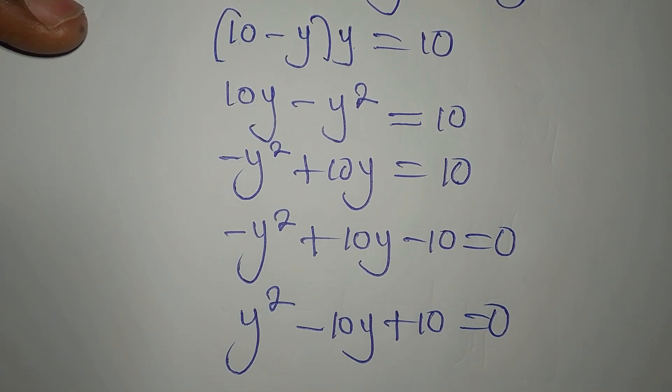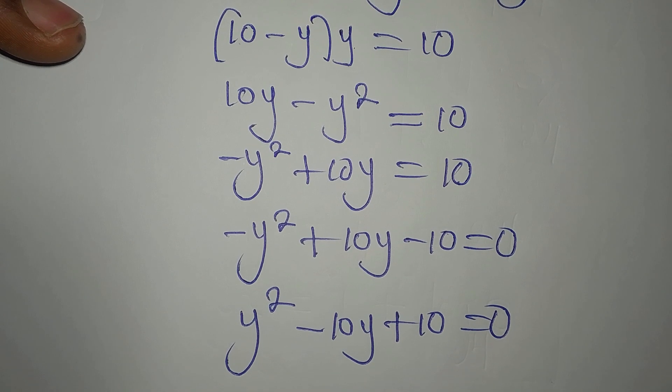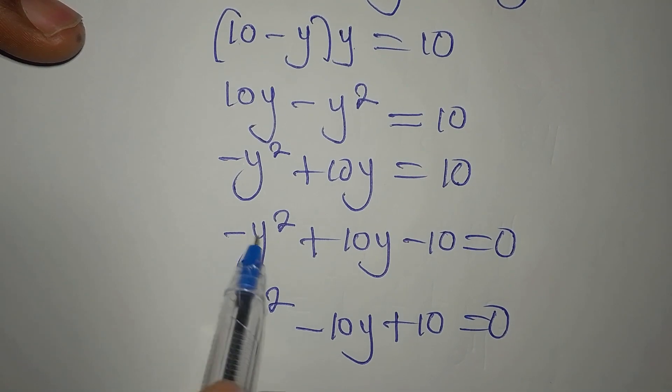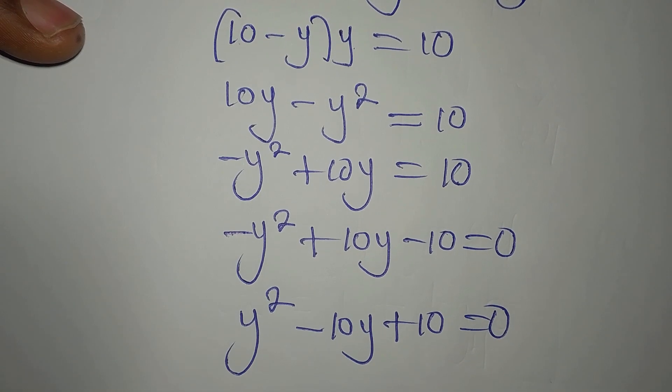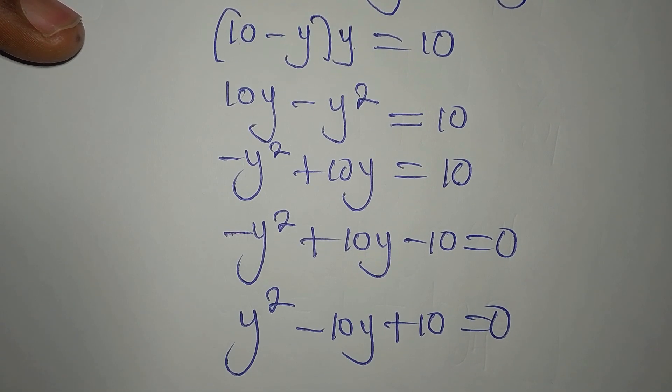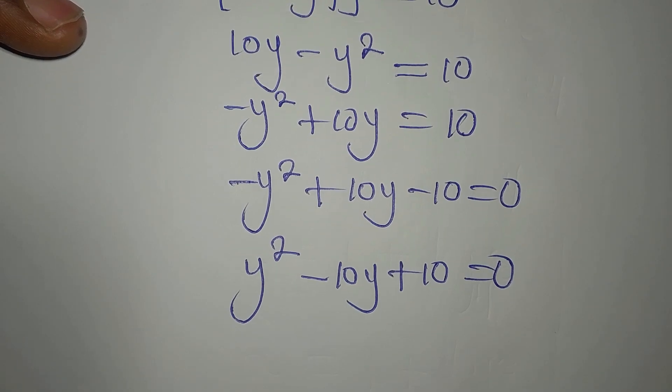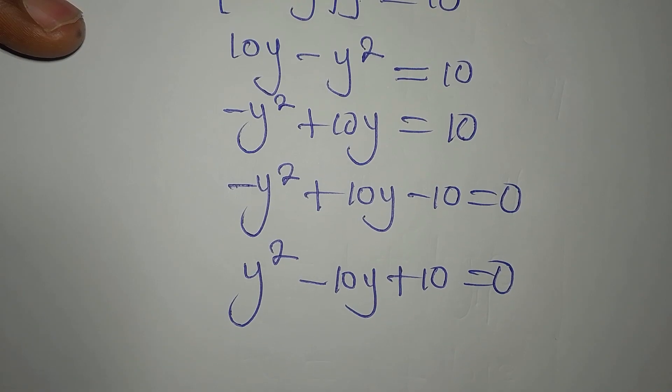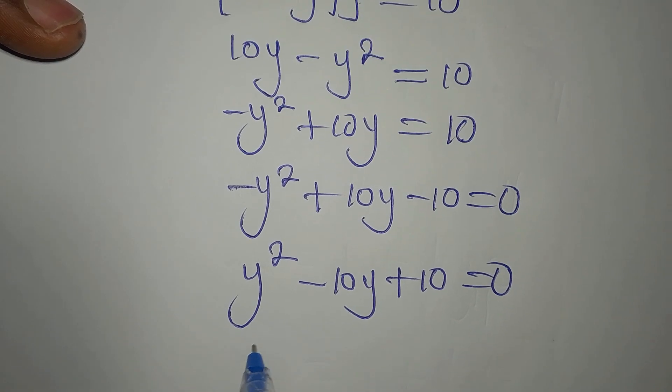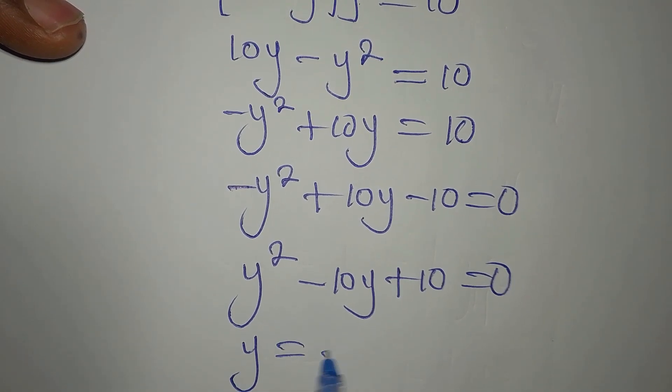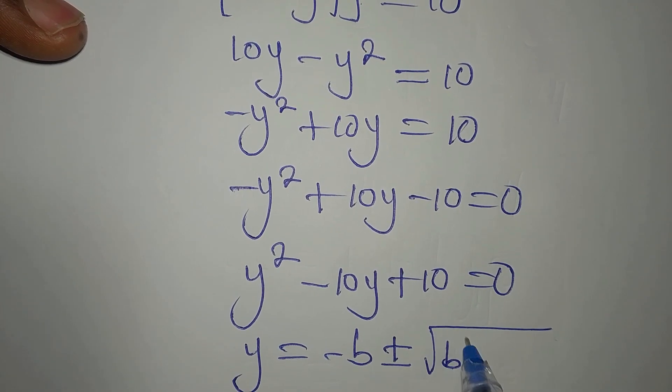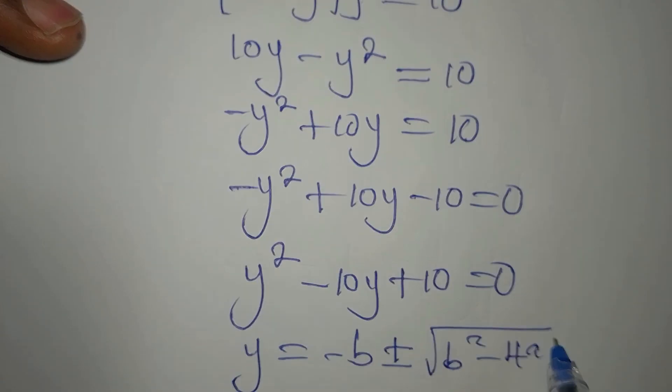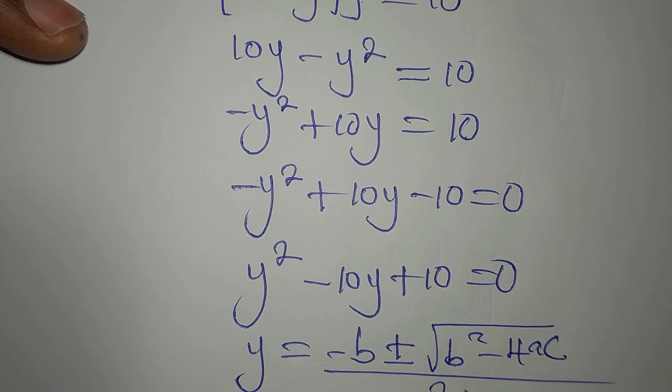What I've done is to multiply both sides or multiply all through by negative 1. So it will turn all the signs to the opposite. Now, this is a quadratic equation. And we are going to use the formula for this. The formula is Y equals minus B plus or minus square root of B squared minus 4AC all over 2A.